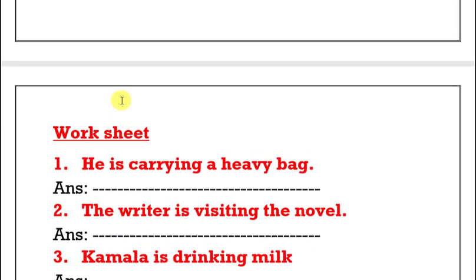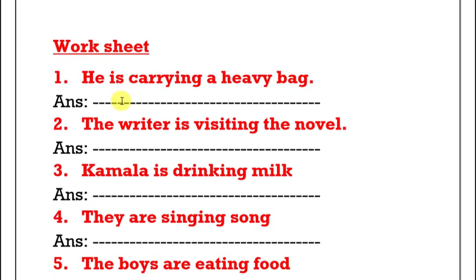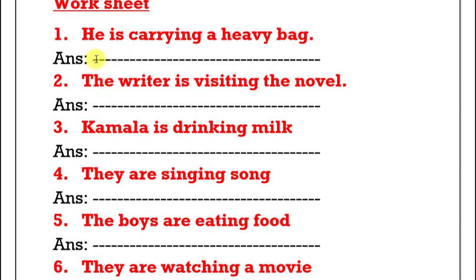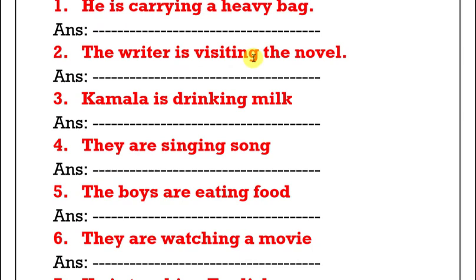Have you gone through all the exercises? Let us discuss one by one. First one: 'He is carrying a heavy bag.' Here 'he' is subject, 'is' is helping verb, 'carrying' is main verb, and 'a heavy bag' is object. Answer: 'A heavy bag is being carried by him.' This is the right answer.